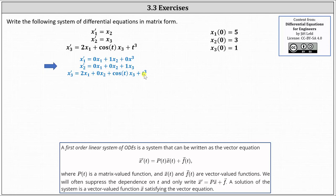To begin, let's write the left side of the equation as a three-by-one matrix, where the entries are x1 prime, x2 prime, and x3 prime. This is the vector-valued function x prime of t.